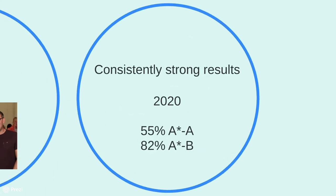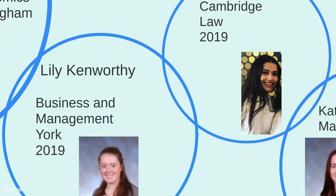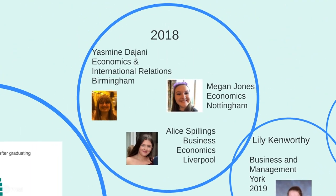In terms of academic results, the department has consistently strong results. Over the years we average around 50% A* to A grades and between 75 and 80% A* to B. Last year was a particularly strong set of results: 55% A* to A and 82% A* to B. Many of our students go on to top universities all over the country — recent leavers include Beth Kearsley who went on to study economics at Cambridge in 2019. We've had students go to Manchester, Cambridge, York, Warwick, and all sorts of different courses — not just economics, but also economics and international relations or management.